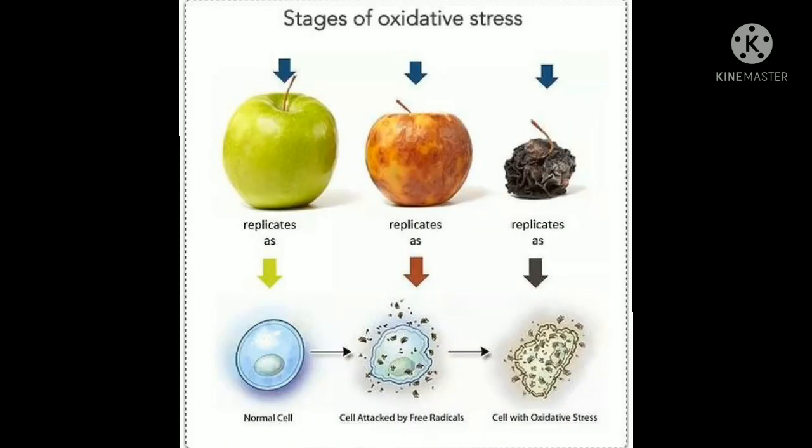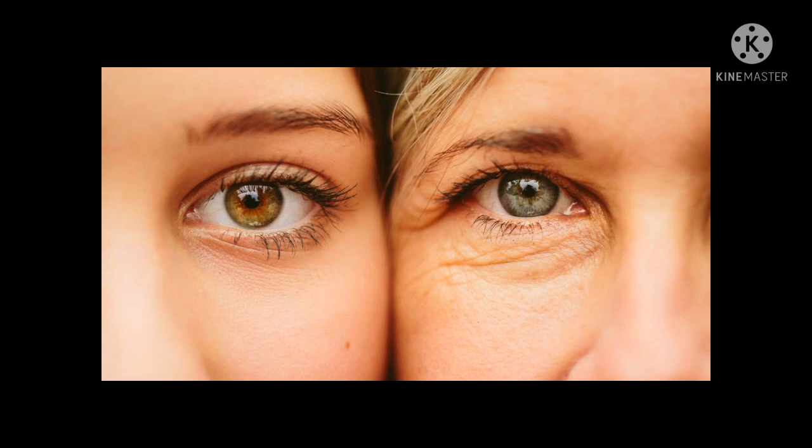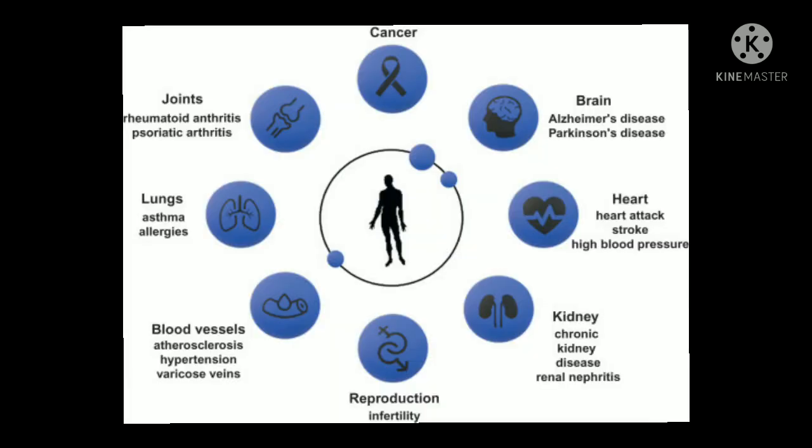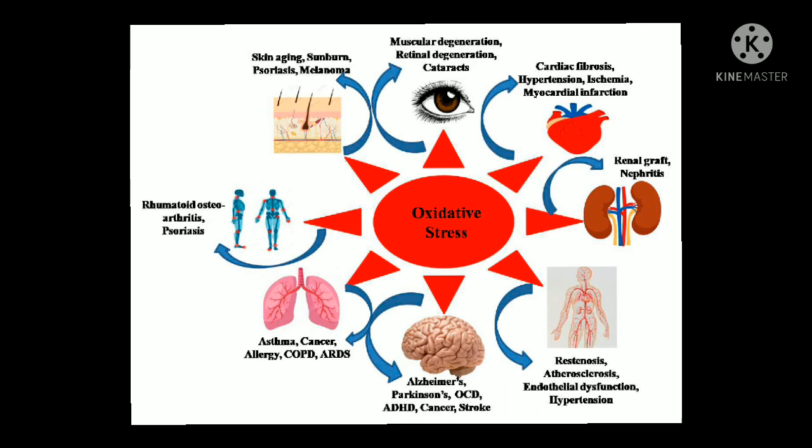The figure shows a normal cell, a cell attacked by free radicals, and a cell with oxidative stress, which are the stages of oxidative stress. Oxidative stress can cause aging — that is age-related changes in appearance like grey hair and wrinkles. It can cause cancer, heart diseases, stroke, arthritis, Parkinson's or Alzheimer's disease, emphysema, inflammatory diseases, etc.